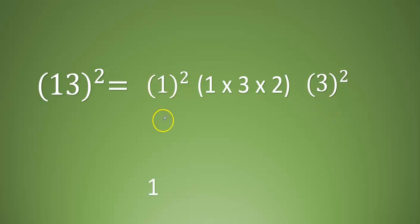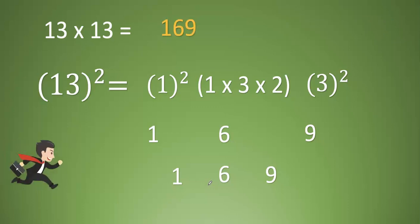So the square of 1 is 1, 1 into 3 into 2 that's 6, and square of 3 is 9. So the result is 169. So 13 into 13 is 169. Repeat: square the tens place and multiply both digits and multiply with 2, then square the unit place. We can see another example.